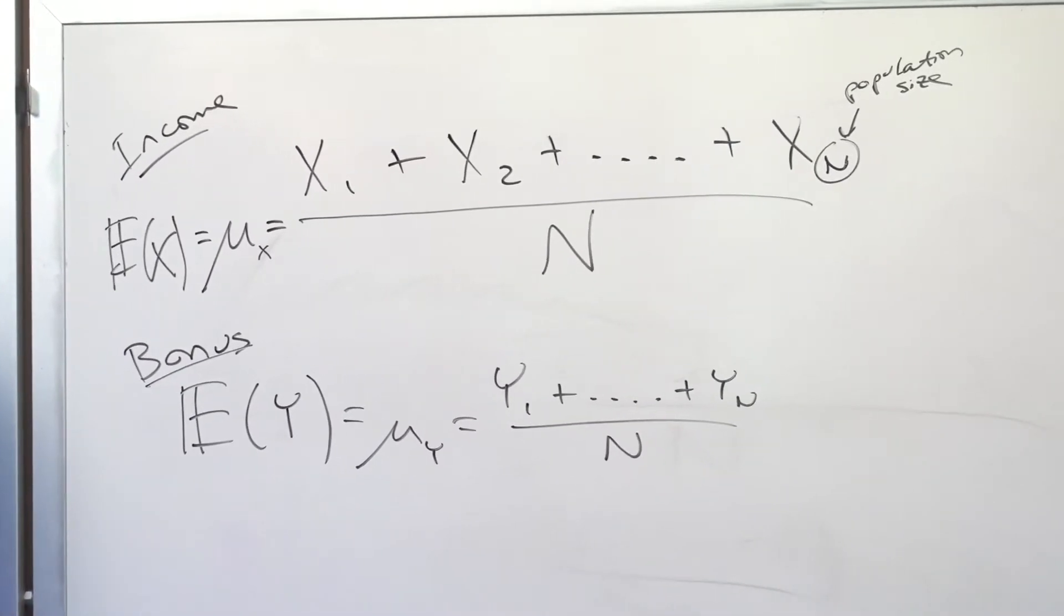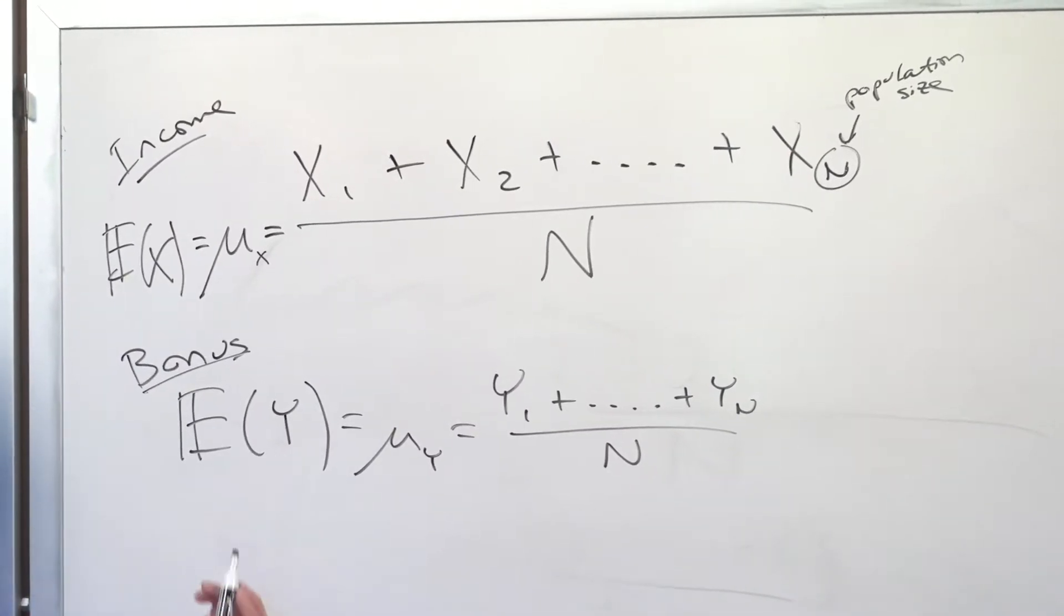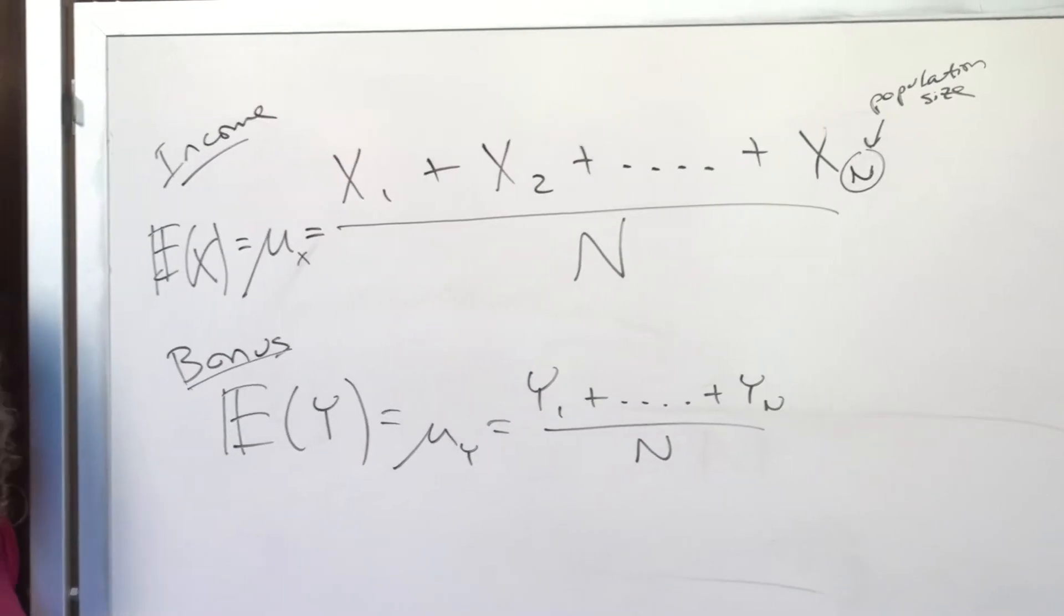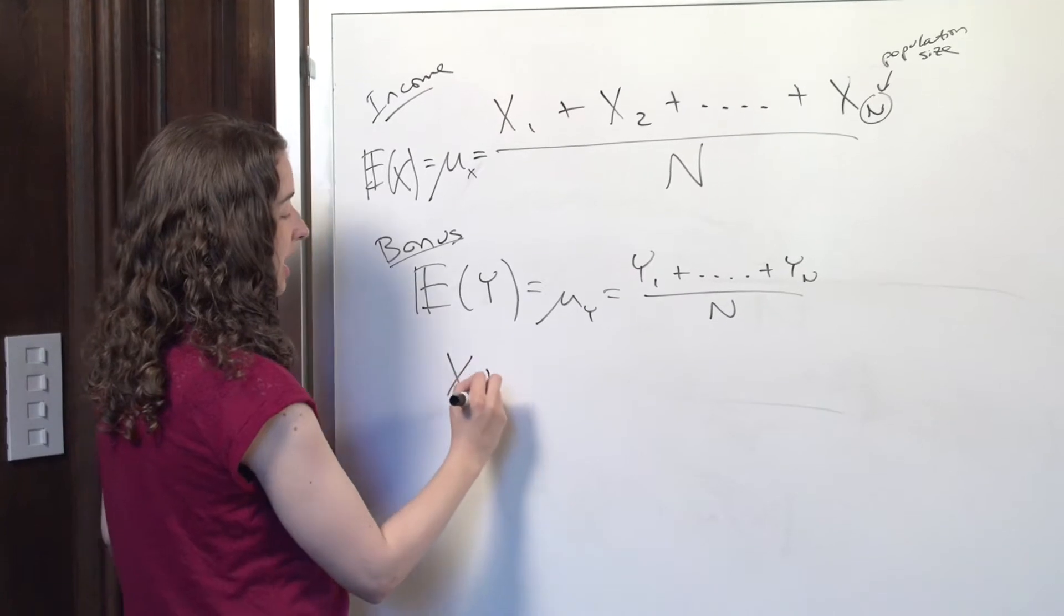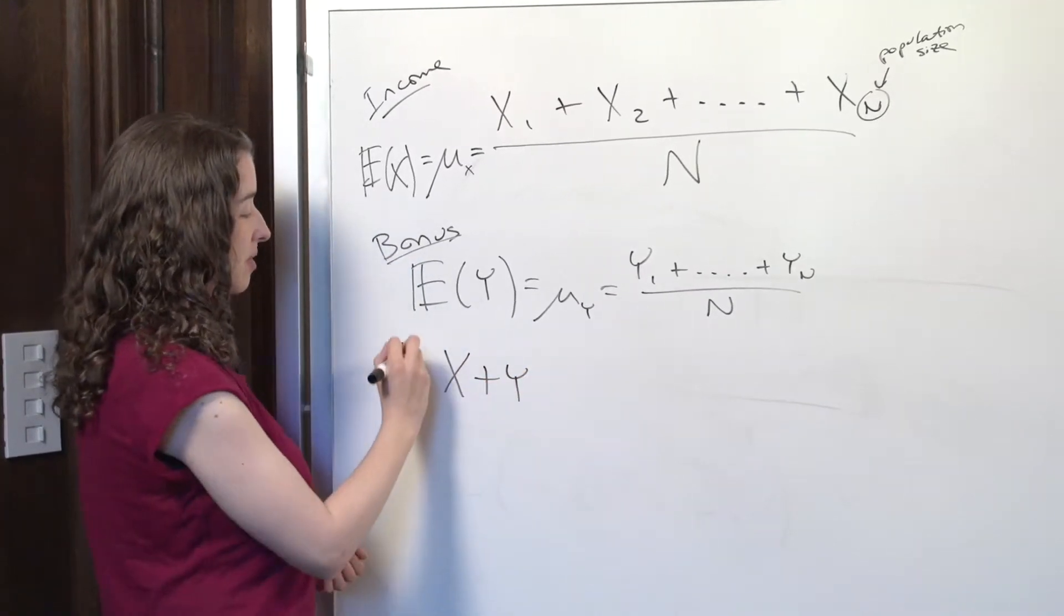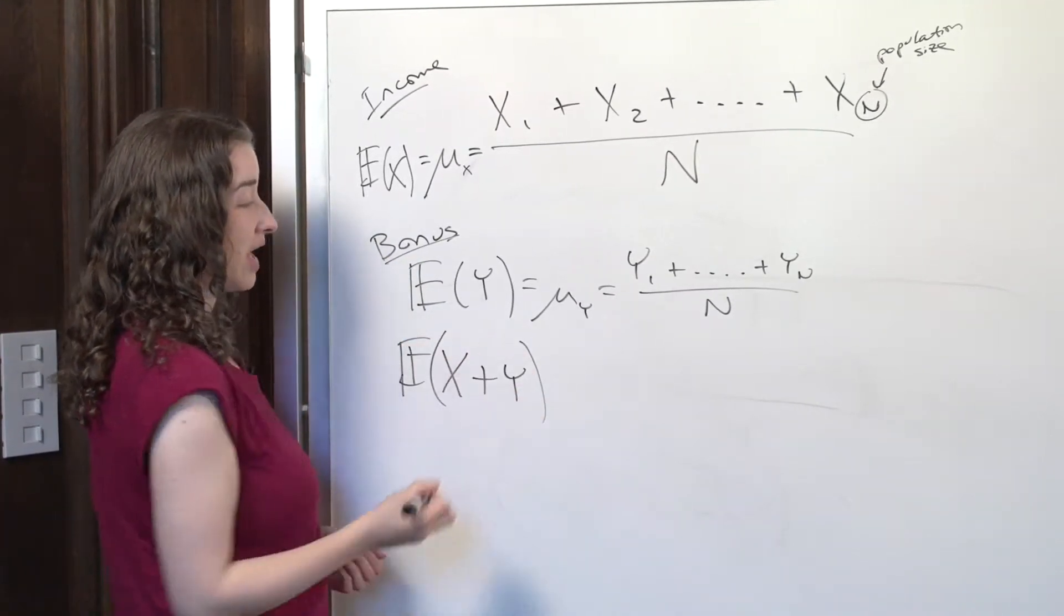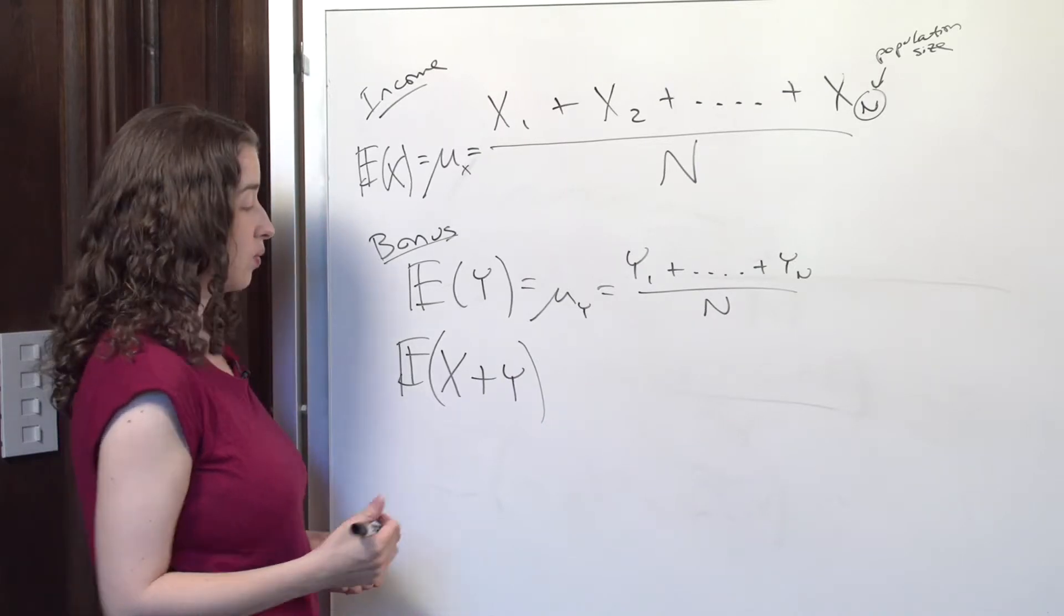So then the next question is, what if the quantity I'm interested in is the total amount of money that someone in this population has available to them over a year? That's equal to X plus Y. And so we might be interested in the expected value of X plus Y. What is that number?